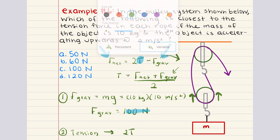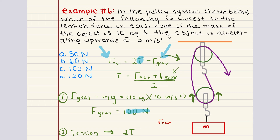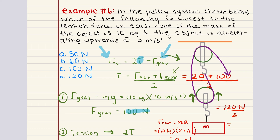We have the gravitational force at 100 newtons, but we need the net force. Using Newton's second law, F_net equals mass times acceleration: 10 kilograms times 2 meters per second squared equals 20 newtons. Plugging into our equation: T equals (20 plus 100) divided by 2 equals 120 divided by 2 equals 60 newtons. So the tension force in each rope is 60 newtons, which best matches answer choice B. So problem six is B.